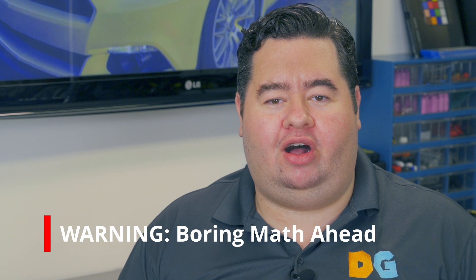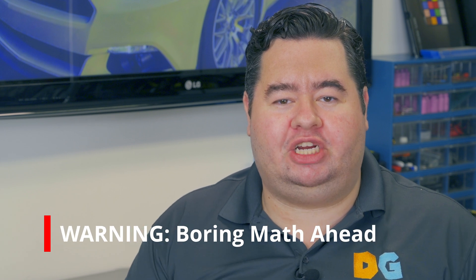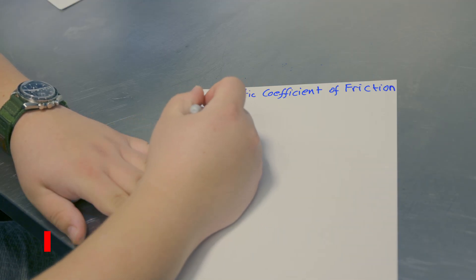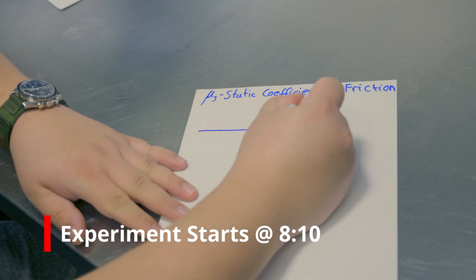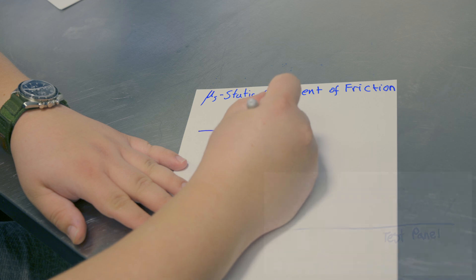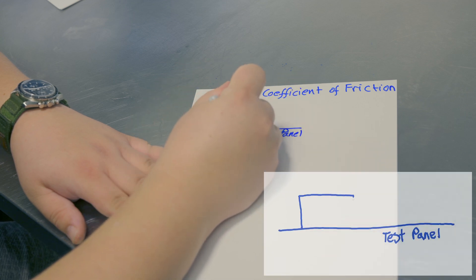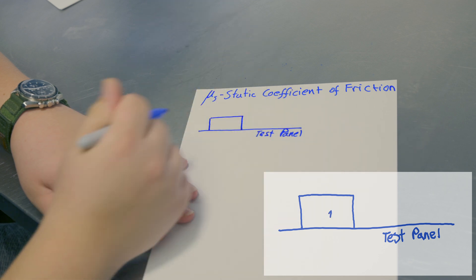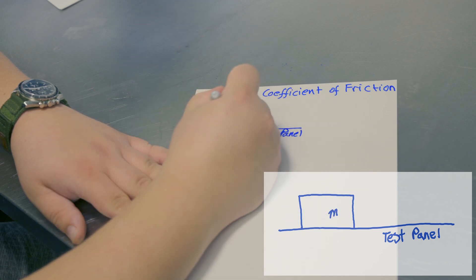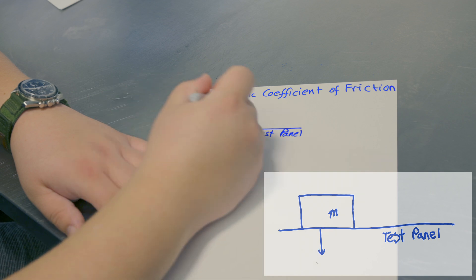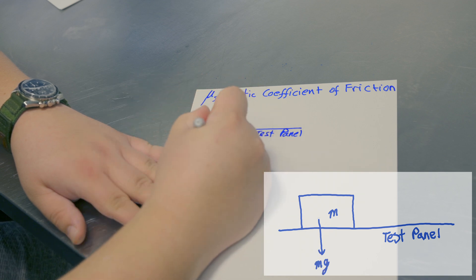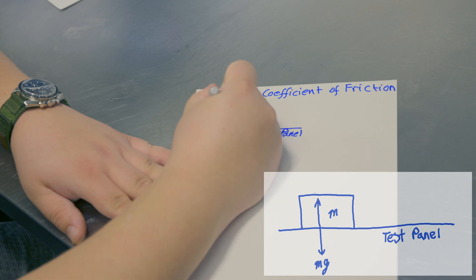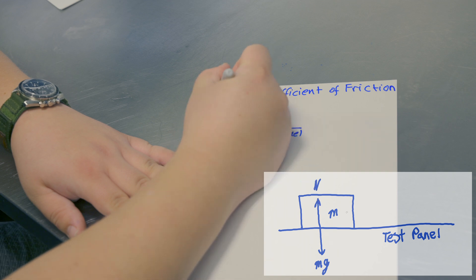We're going to be using something called the coefficient of friction. The best way to visualize the static coefficient of friction is to imagine we have a rigid plane — that is our test panel. On that panel we place a big test block, which is also a rigid surface, and it has some kind of a mass. Because of gravity it has weight, and also it has a normal force.